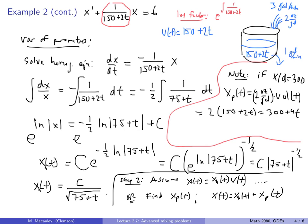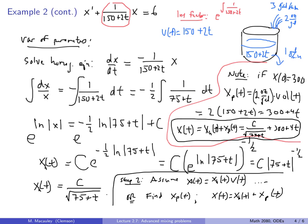So note: if the initial concentration is 2 ounces per gallon, that means there are 300 ounces initially, and the particular solution is 2 times (150 + 2t) = 300 + 4t. Using a little bit of clever thought we can skip the hard step of variation of parameters — both that and the integrating factor method would involve a pretty nasty integral. So the general solution is x(t) = c over sqrt(75 + t) + 300 + 4t.